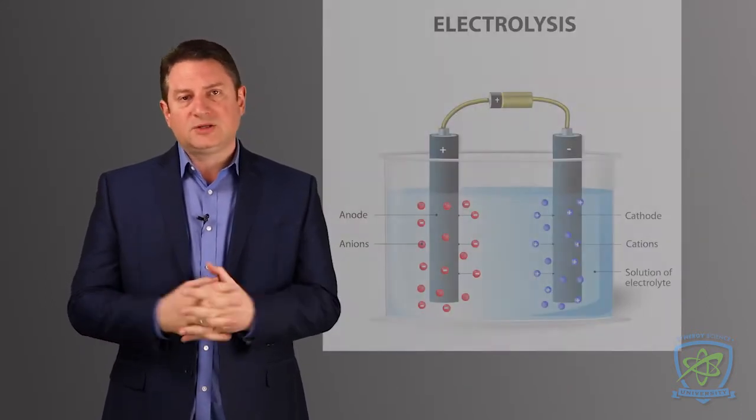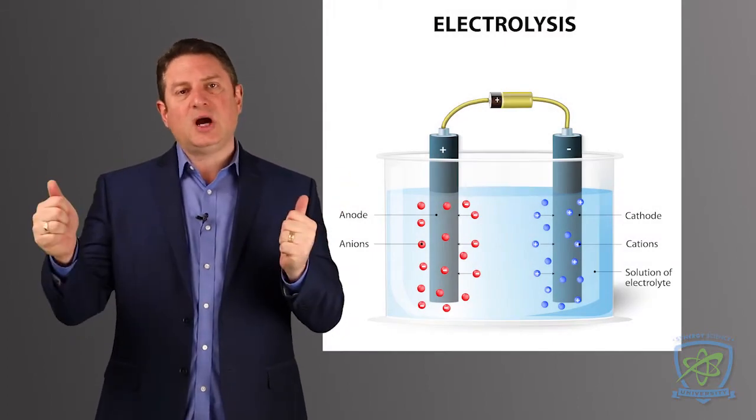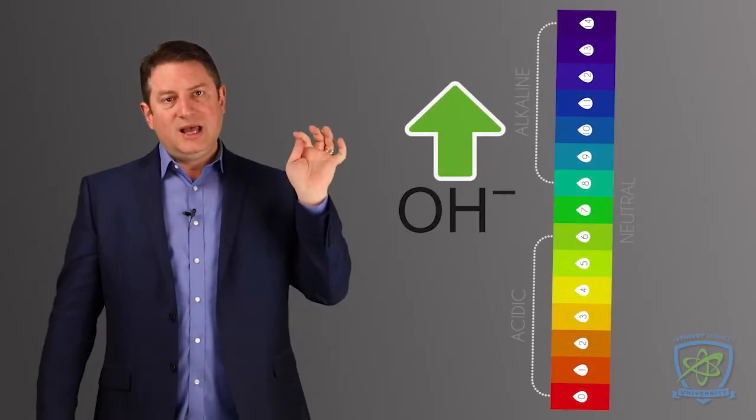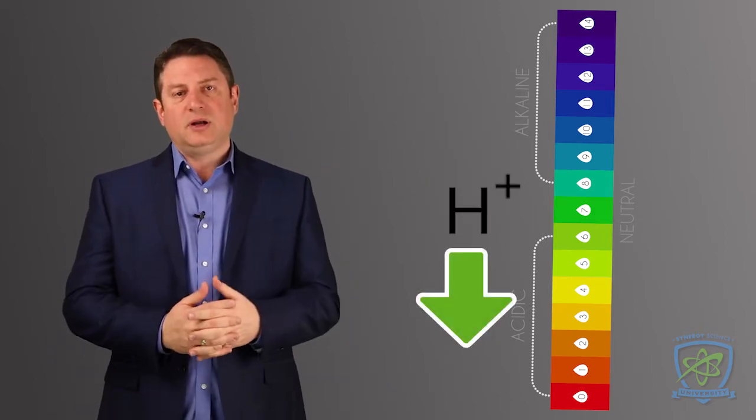This is what electrolysis does through changing hydrogen ions and hydroxides. This is what changes pH. Hydroxides, OH-, raise pH in the water. Hydrogen ions, H+, lower pH in the water.